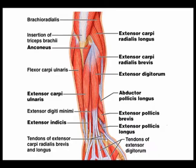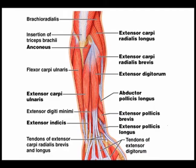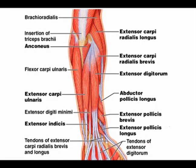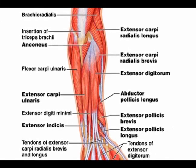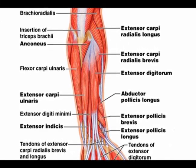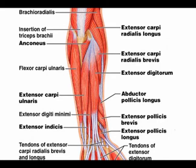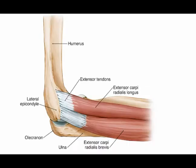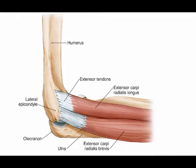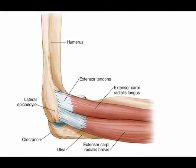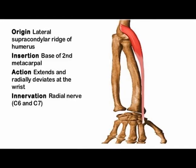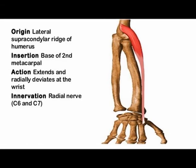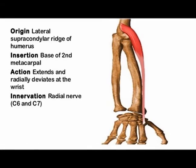Again, the extensor carpi radialis longus muscle is often abbreviated to the ECRL. It is classified as a posterior forearm muscle in the superficial group. The origin is the proximal supercondylar ridge on the humerus. The insertion is the dorsal base of the second metacarpal.